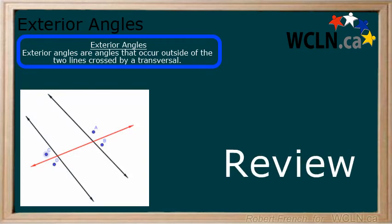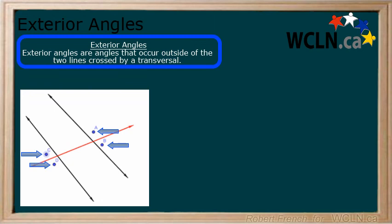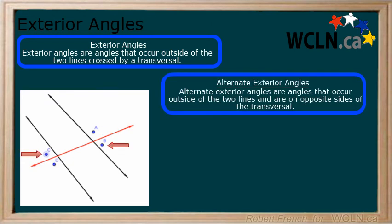In this lesson you learned that exterior angles occur outside of two lines crossed by a transversal. You also learned that alternate exterior angles are pairs of angles that occur on opposite sides of the transversal. A, B, C and D.